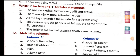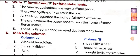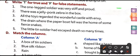Next is true or false. First: the one-legged soldier was very stiff and proud — this is true. Second: there was a jelly pong zebra in the box — this is false. Third: all the toys regarded the wonderful castle with envy — this is true. Fourth: the drain where the paper boat sailed was the home of fierce snakes — this is false. Fifth: the little tin soldier had escaped death so many times — this is true.